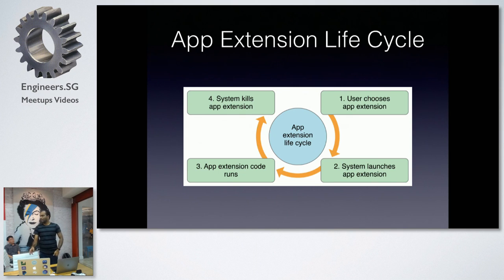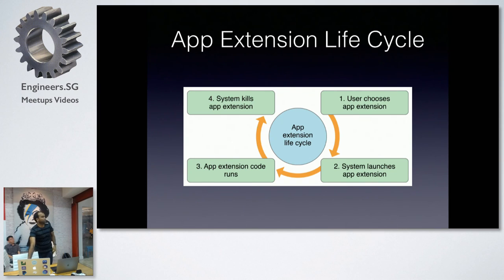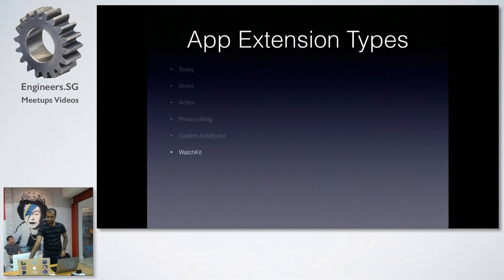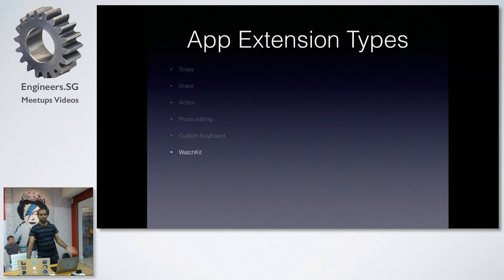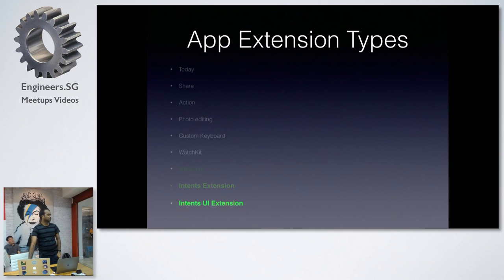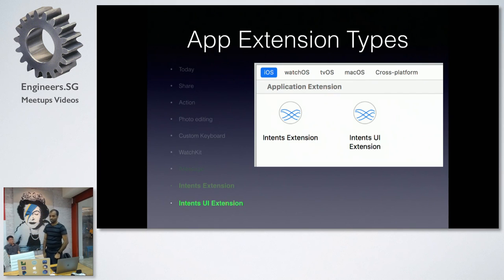Once the user chooses your App Extension, iOS asks to launch it, the extension runs its core logic, and once finished, the system kills it. The reason I'm talking about App Extensions is that Apple introduced a couple more last year at WWDC: iMessage, Intents Extensions, and Intents UI Extensions. The bottom two — Intents Extensions and Intents UI Extensions — are the ones we use for SiriKit integration. Remember these two.